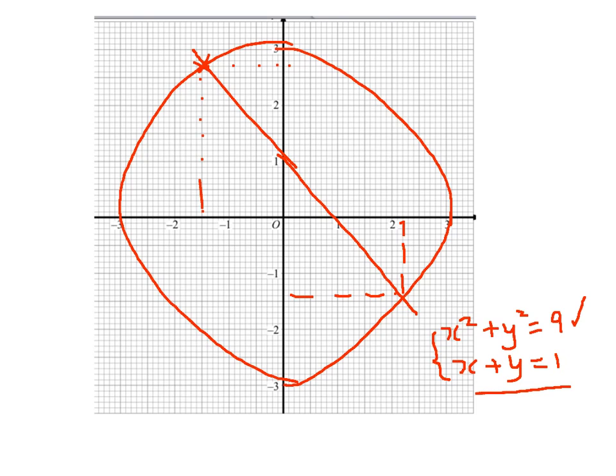So, the first coordinates: x equals minus 1.6 and y equals 2.6. And the second coordinates are x equals 2.6 and y equals minus 1.6. Thank you.